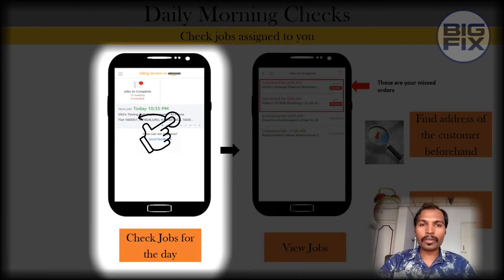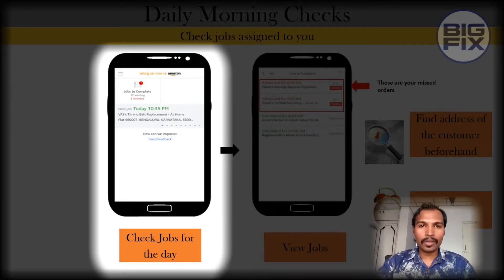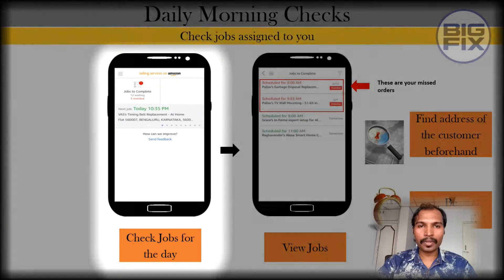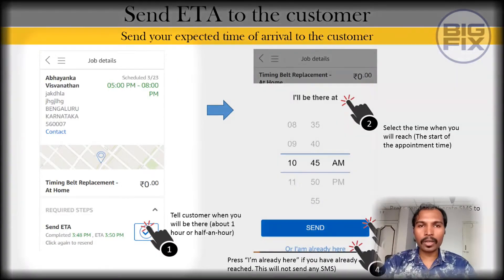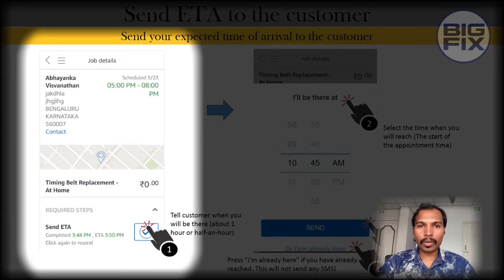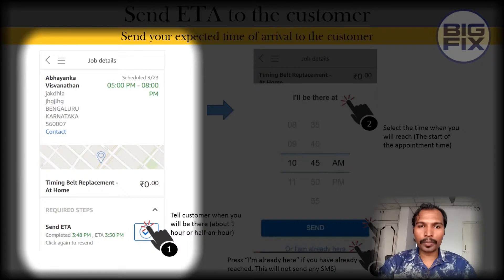By sliding that bar towards your left, you can check out the next jobs which are assigned to you. To know more about a particular job detail, click on the job. A new page will open in which all the information about that job will be provided — name of the customer, location, address, contact details, map, and the send ETA option.